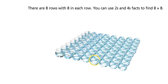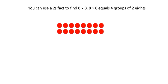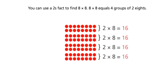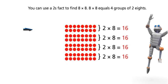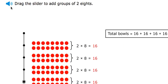You can use twos and fours facts to find eight times eight. You can use a twos fact to find eight times eight. Eight times eight equals four groups of two eights. Drag the slider to add groups of two eights.